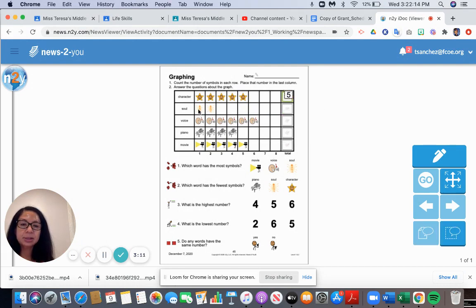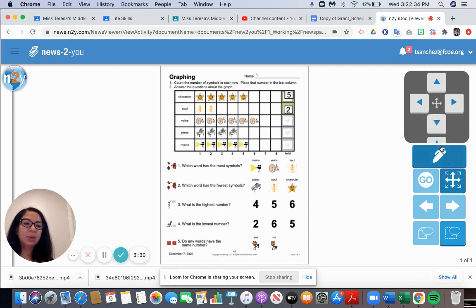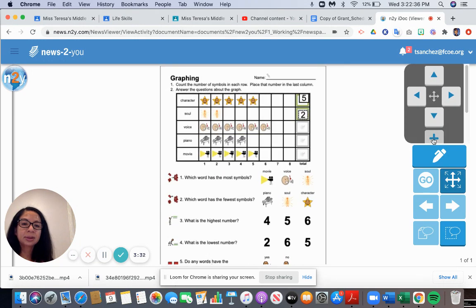Now the next one is soul. How many souls do we have? One, two. There are two souls. So we move the number two into that box. Almost put it in the wrong box.